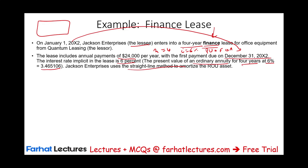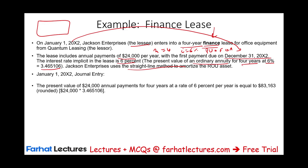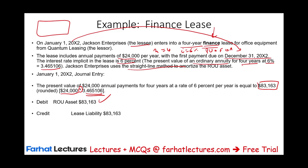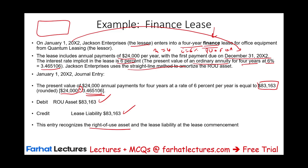Jackson Enterprises uses the straight-line method — even if not told, you assume straight line. First, we record the initial journal entry at the inception of the lease. We find the present value of the payments: $24,000 multiplied by the present value factor 3.465106 gives us $83,163. We debit the right-of-use asset $83,163 and credit the lease liability $83,163. This entry recognizes the asset and the liability.